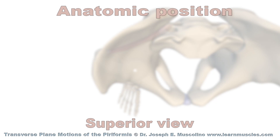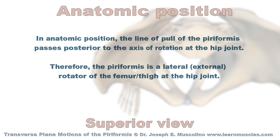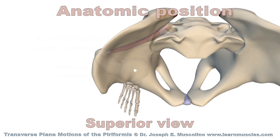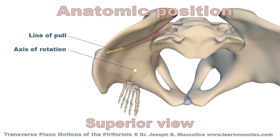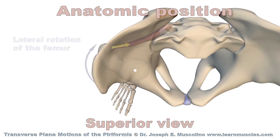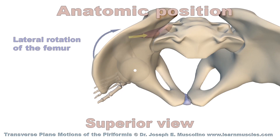Now we have a superior view. Again, in anatomic position, the line of pull of the piriformis passes posterior to the axis of rotation at the hip joint. Therefore, the piriformis is a lateral rotator of the femur at the hip joint. The axis of rotation is represented by the white dot and the line of pull of the piriformis is represented by the yellow arrow. The piriformis contracts and creates lateral rotation of the femur.